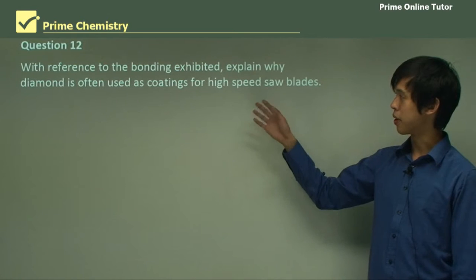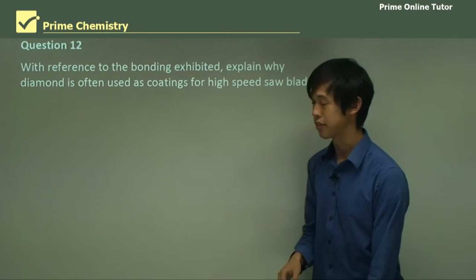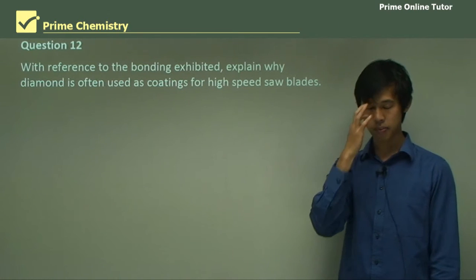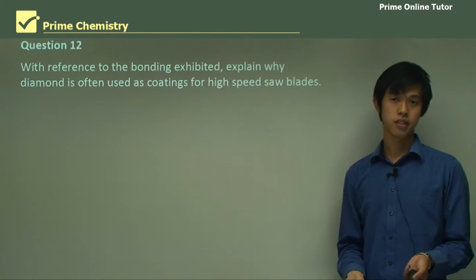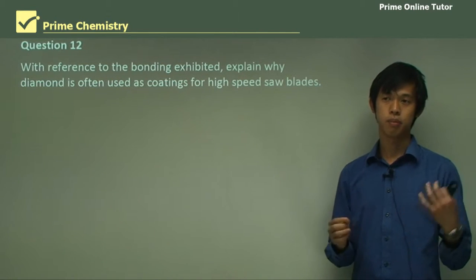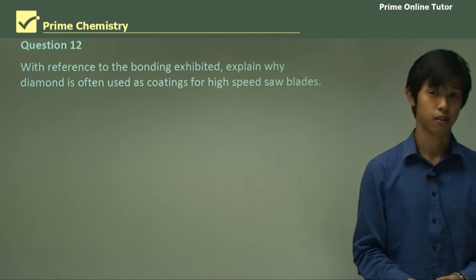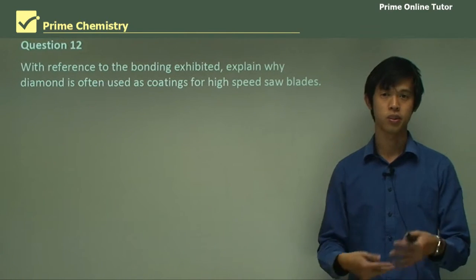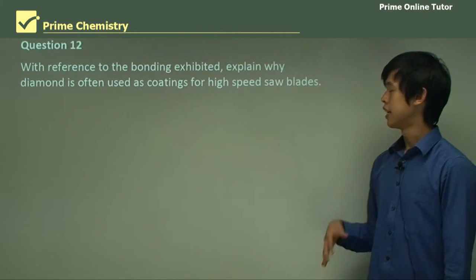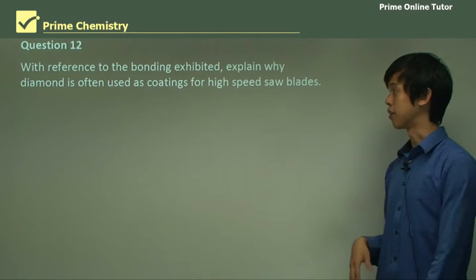With reference to the bonding exhibited, explain why diamond is often used as coatings for high-speed saw blades. So a lot of companies will say, our super awesome diamond blade has diamond coating, and that is good for your sawing. And the reason they have that is to increase the durability of the saw. So why is that?